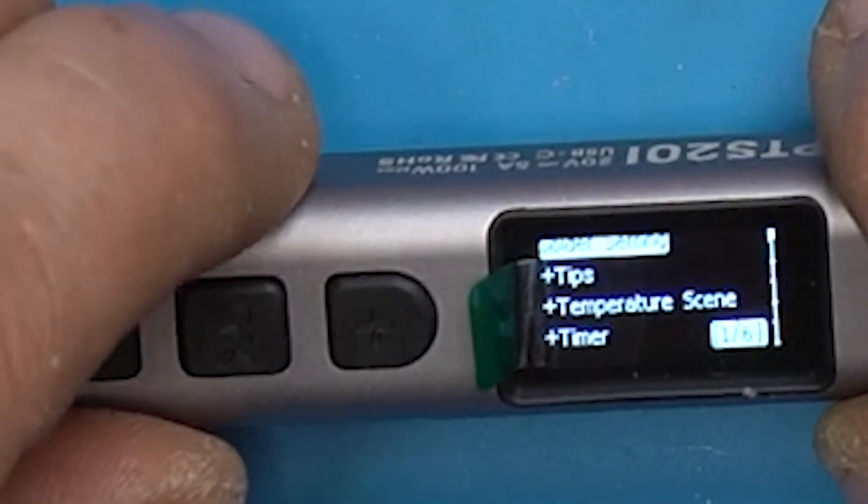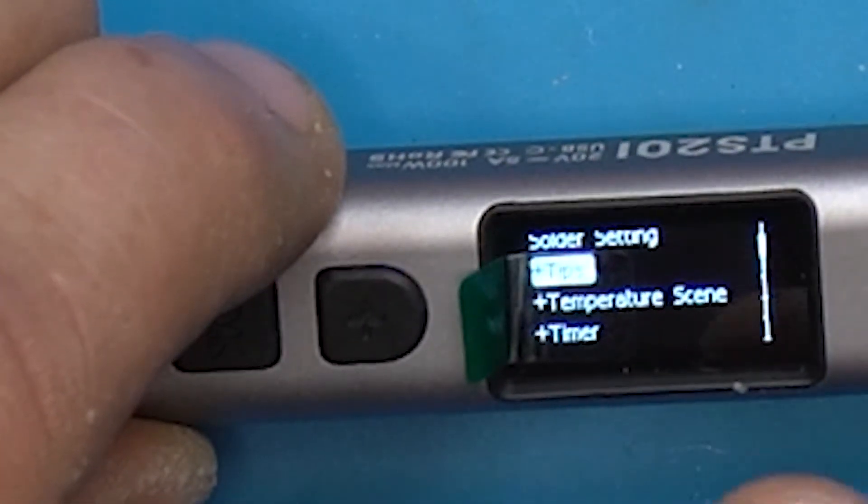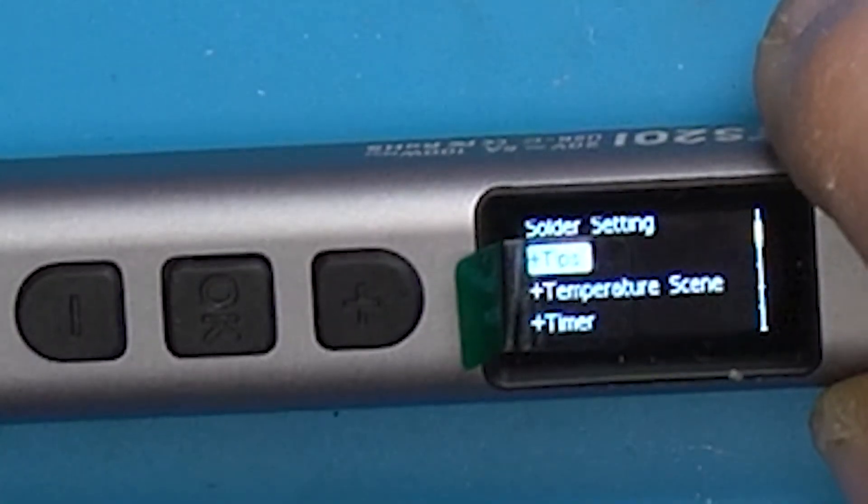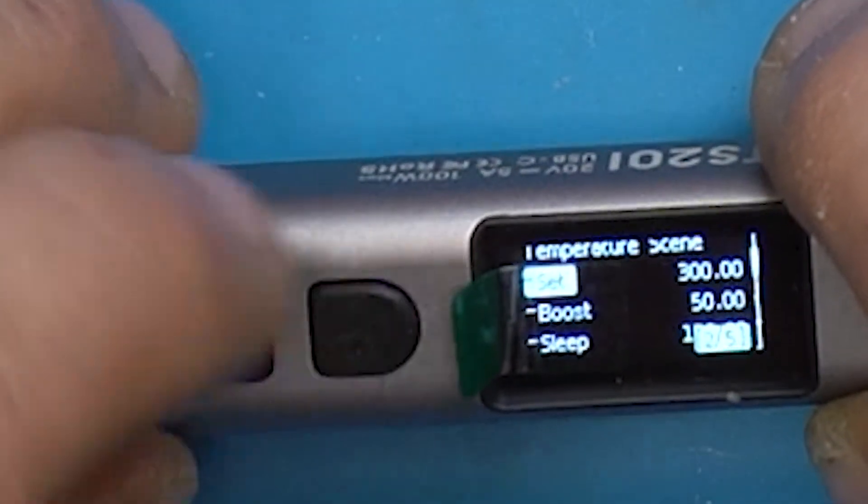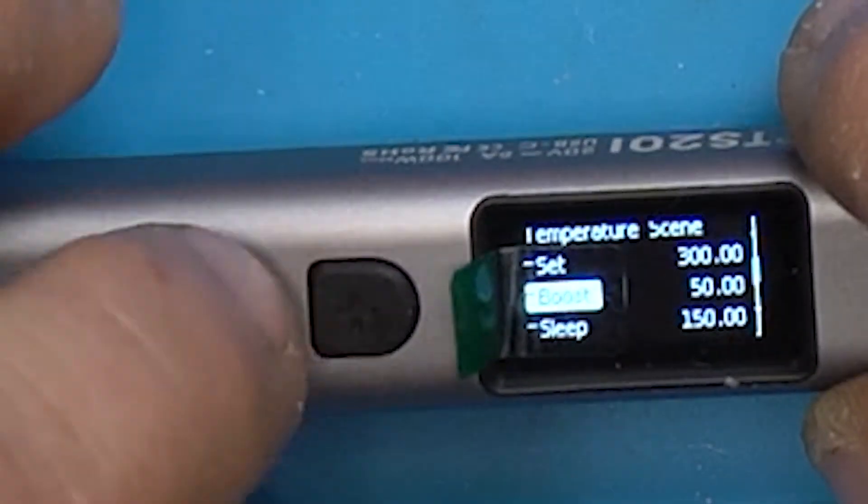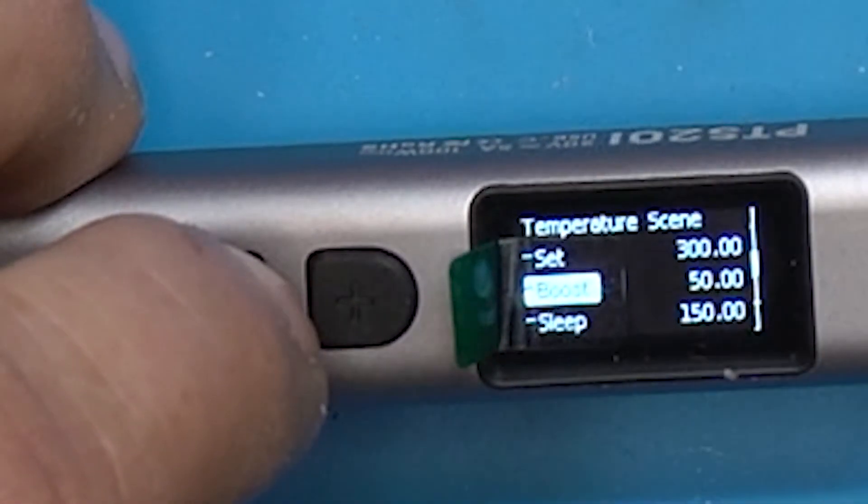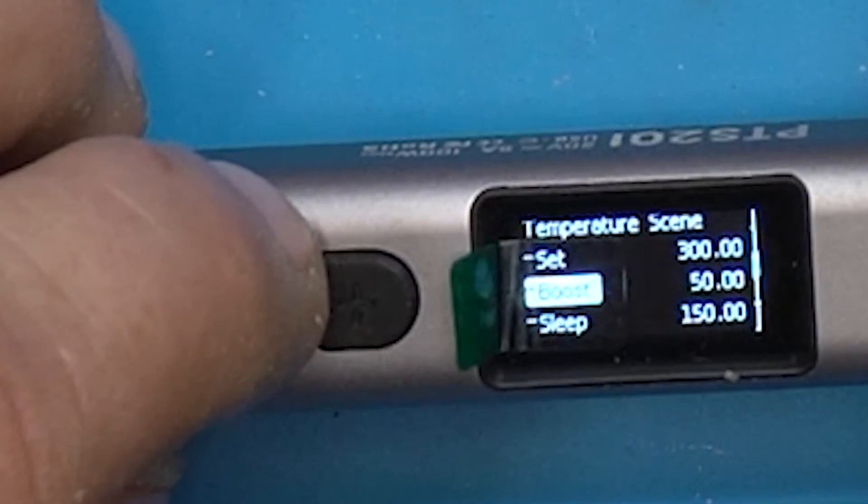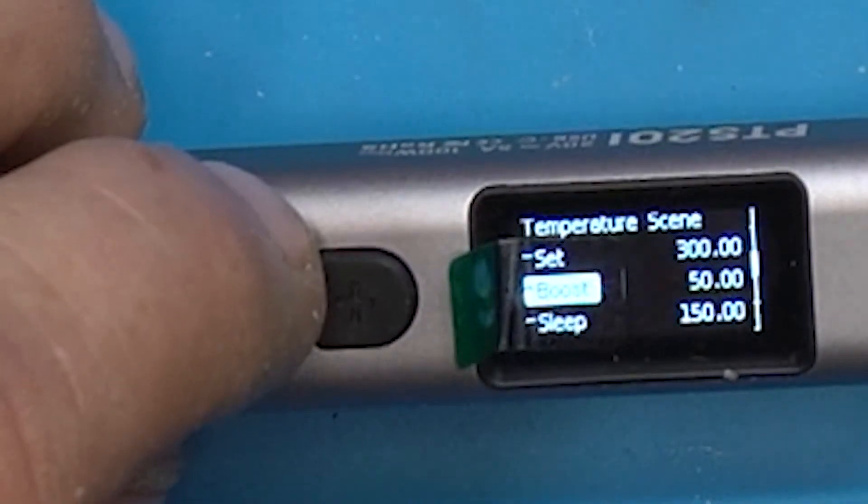Now let's go to solder settings. In temperature scene, you can set your initial temperature, which is 300 degrees Celsius. Boost temperature - you hold down the OK button and it boosts for a short period, set to 50 degrees Celsius. So at 300 you're soldering and if you need extra heat, hold the OK button and it'll boost to 350. Sleep is set to 100.